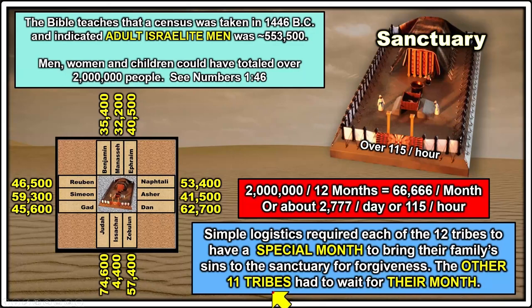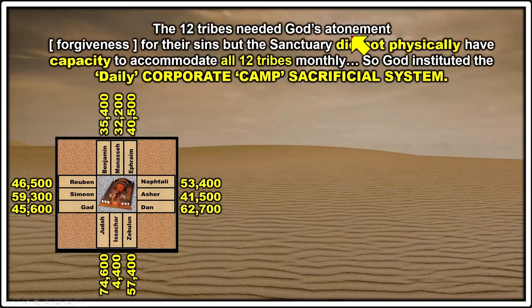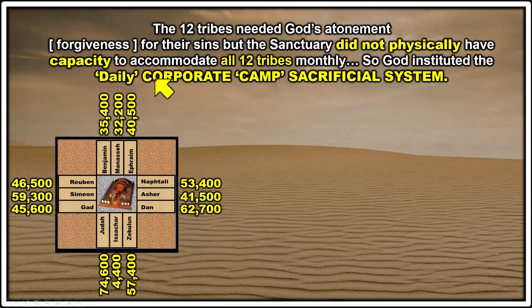Simple logistics required that each of the 12 tribes have a special month to bring their family sins to the sanctuary for forgiveness. The other 11 tribes had to wait for their month. This is the key thing to remember: what would happen if your month was 11 months away? Would you have to exist with unforgiven sins for 11 months, or did God make provisions for your sins to still be forgiven? Let's take a look.